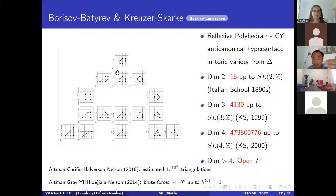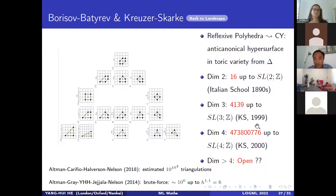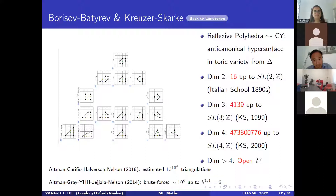The next number was unknown until the work of physicists Kreuzer and Skarke, who in 1999 brute-forced this on a Pentium machine and counted 4,139 reflexive polygons in dimension three up to SL(3,ℤ). These give two complex-dimensional Kähler Ricci-flat algebraic varieties known as K3 surfaces. Since we wanted complex dimension three, you need to construct four-dimensional polytopes.